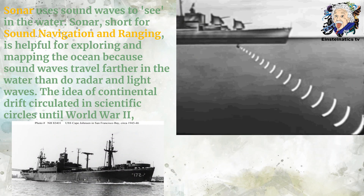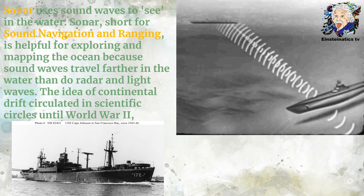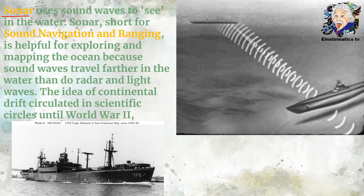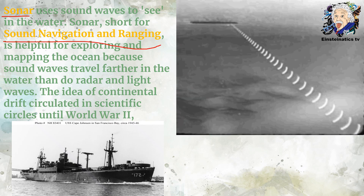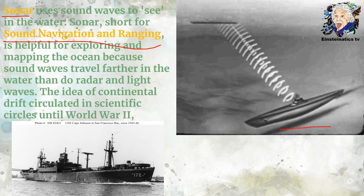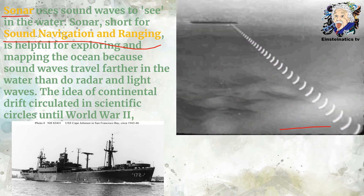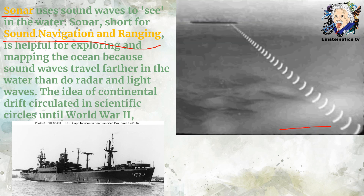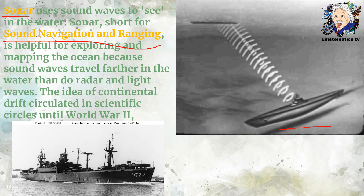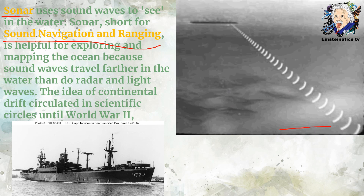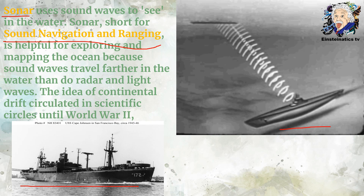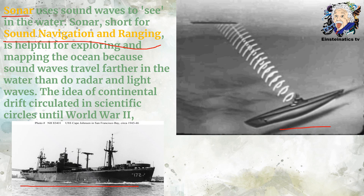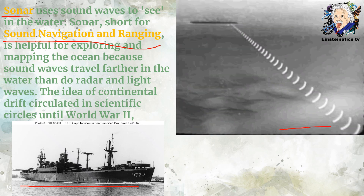During World War II, battleships used SONAR — an acronym for Sound Navigation and Ranging — to detect enemy submarines. SONAR uses sound waves to see in water and is helpful for exploring and mapping the ocean because sound waves travel farther in water than radar and light waves. Aboard the USS Cape Johnson, Harry Hess made his discovery of the Mid-Atlantic Ridge, which paved the way for his theory of seafloor spreading.